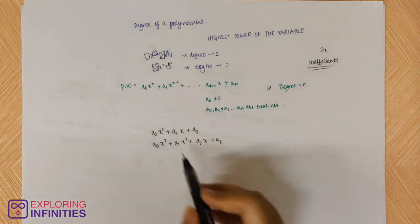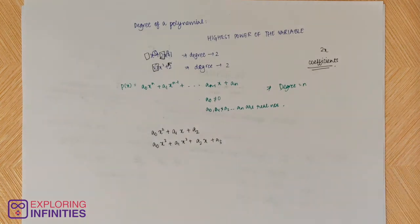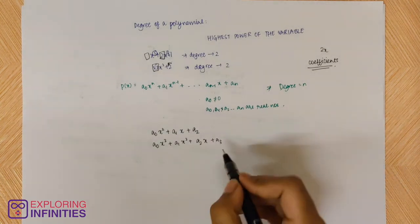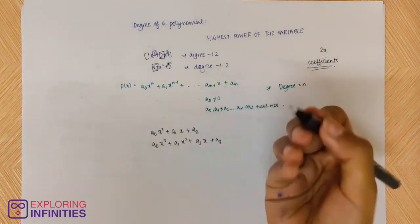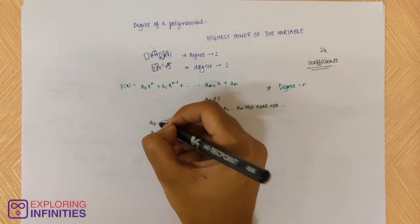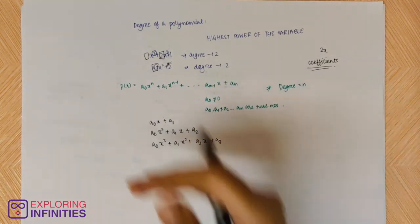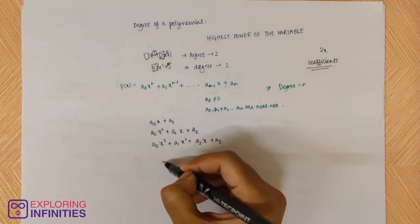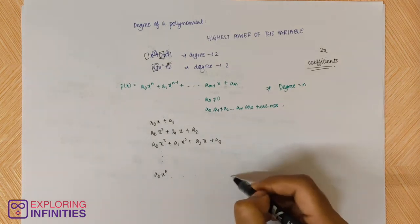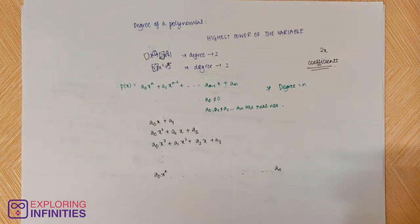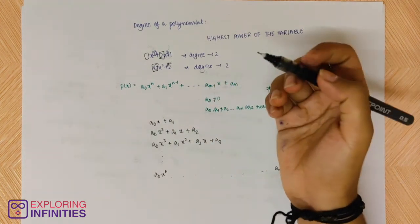Coefficients can be 2, 1, root 3, root 5, root 10, or anything. If the expression has x to the power 1, you write a₀x + a₁. These expressions can be written as a₀xⁿ and you keep building the expression until you reach aₙ. They specify that a₀ must not equal 0.